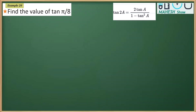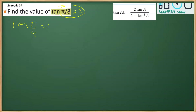This is Example 8 from the trigonometric functions chapter, Chapter 3 for Class 11. We have to find the value of tan(π/8). We do not know the value of tan(π/8) directly, but we do know the value of tan(π/4), because twice of π/8 is π/4, and we know that tan(π/4) is equal to 1.